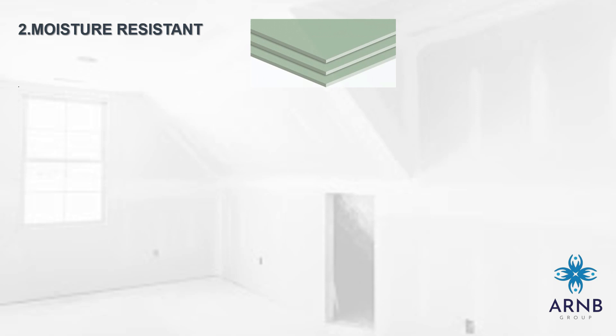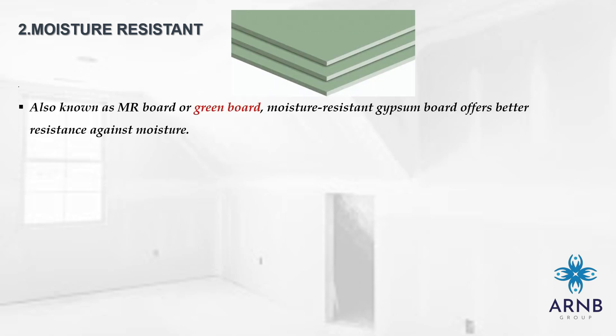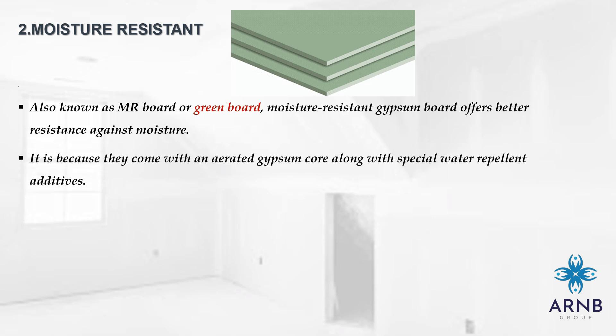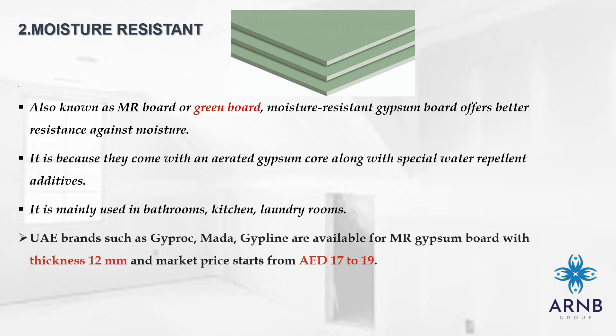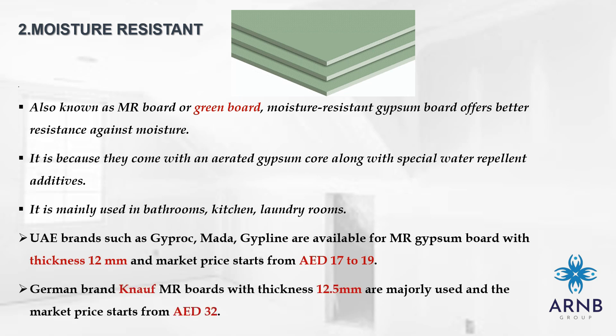The second type is moisture-resistant board, also known as MR board or green board. Moisture-resistant gypsum board offers better resistance against moisture because it comes with an aerated gypsum core along with special water-repellent additives. It is mainly used in bathrooms, kitchens, and laundry rooms. UAE brands such as Gyprock, Madha, and Gypwain are available in 12 mm thickness with market prices from 17 to 19 AED. German brand Knauf MR boards are majorly used for projects, with a thickness of 12.5 mm and market price starting from 32 AED.